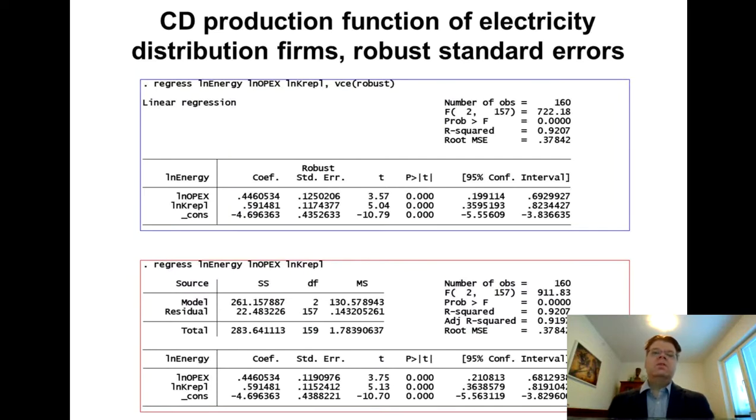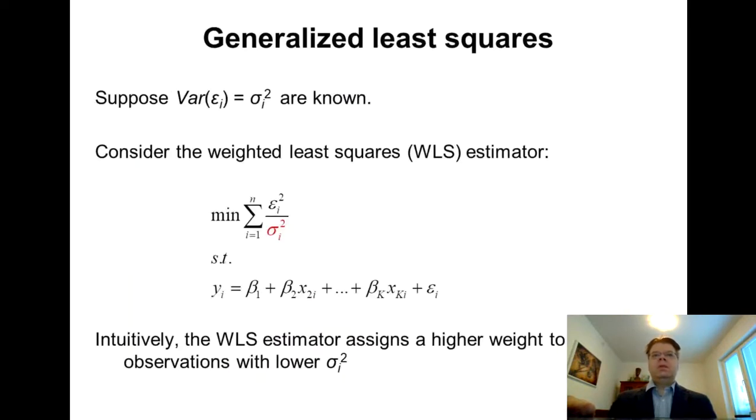But indeed, in empirical work you often see the robust standard errors just used without any explanation. So it's also good to understand what's the meaning of that, why it is robust, it's supposed to be robust against heteroscedasticity. What if we then have some more serious problem with the heteroscedasticity? What if we do this route number B? Then we can resort to the so-called generalized least squares.